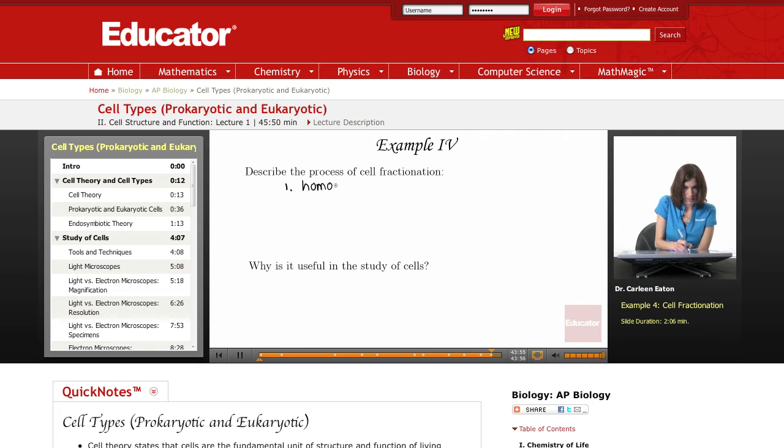The first is homogenization. In this step, the cells are broken apart, but it's done in such a way that the organelles are not damaged.